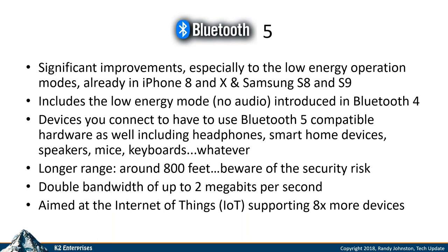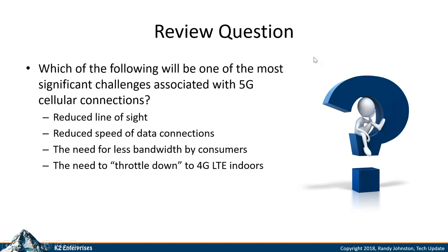Bluetooth 5 replaced Bluetooth 4 Low Energy and has some good and bad attributes. Good: longer range — about 800 feet, versus the old 30 feet — more device support, lower energy use, and speed increased to 2 Mbps. Bad: a lot of data can now be transferred over a connection that's not very secure at greater ranges. Bluetooth 5 will come in most products; you'll either have to choose to turn it off or not, and it won't be very securable. That gets us to the next review question on 5G.